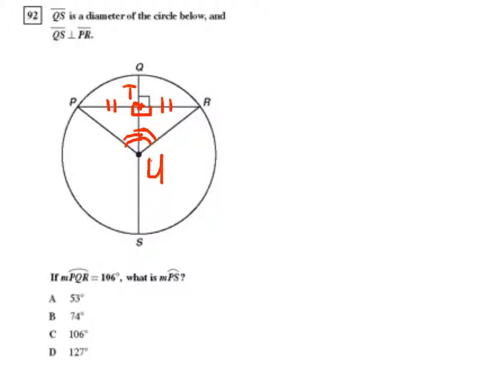So if that's the case, then we have half of 106 equals 53 degrees. So the measure of this angle here is 106 degrees—I apologize, that is not correct. The measure of that angle there is half of 106 degrees, which is 53 degrees.